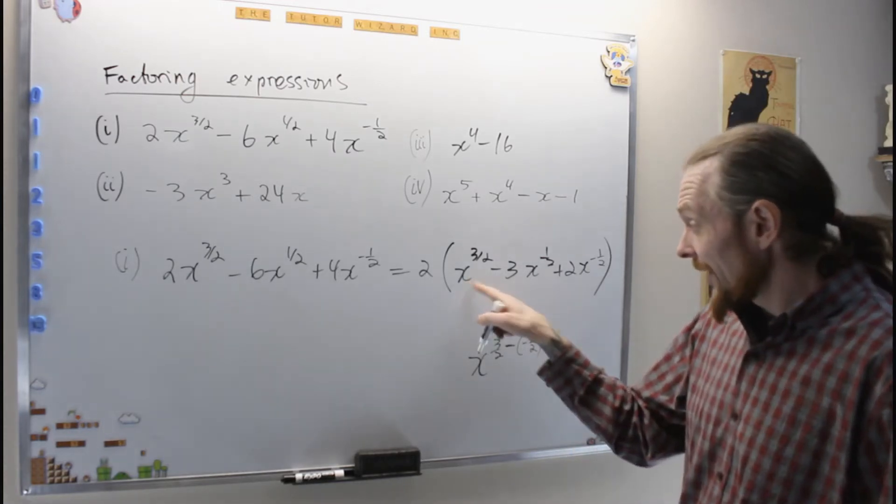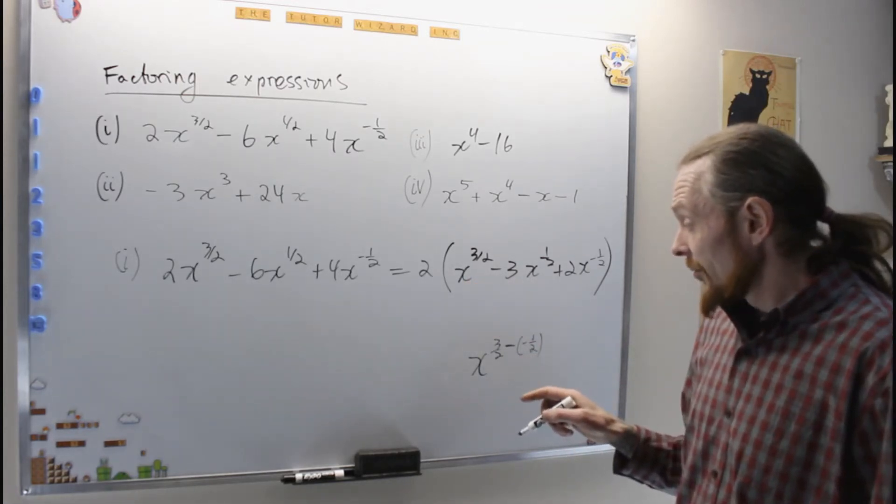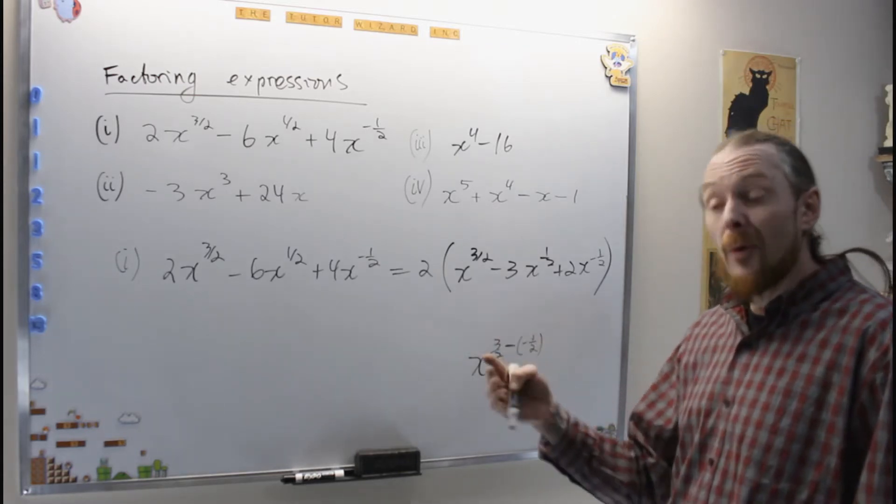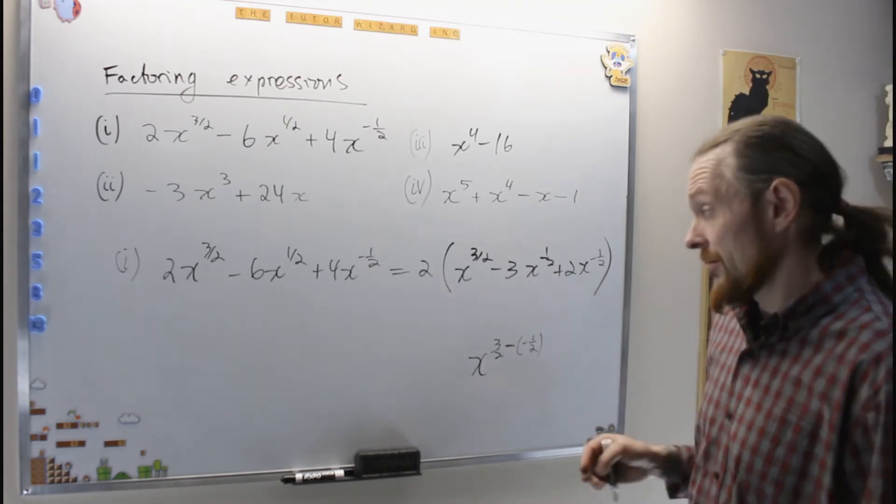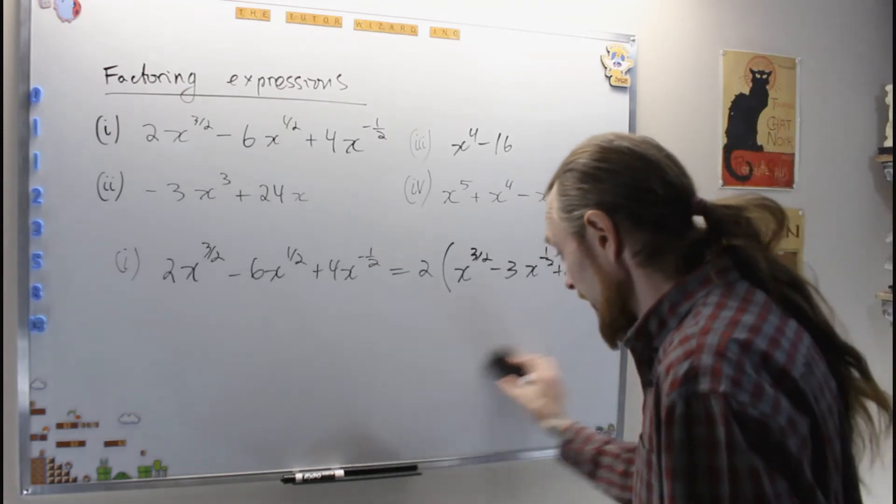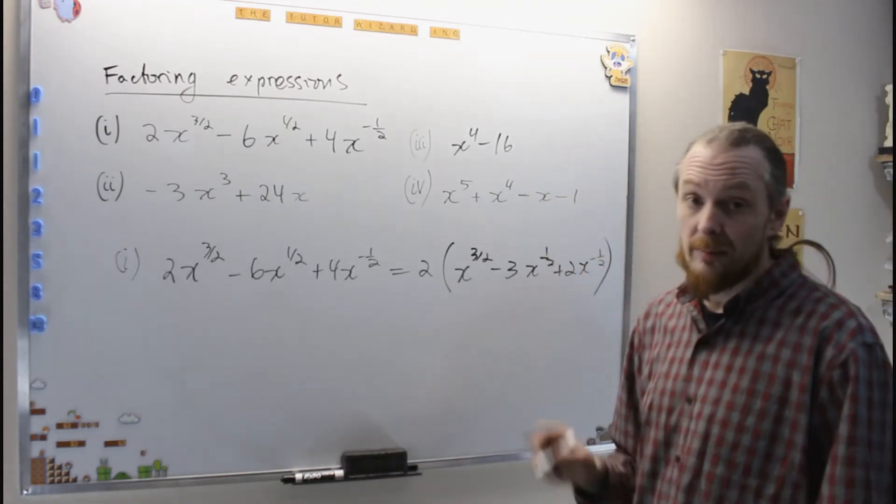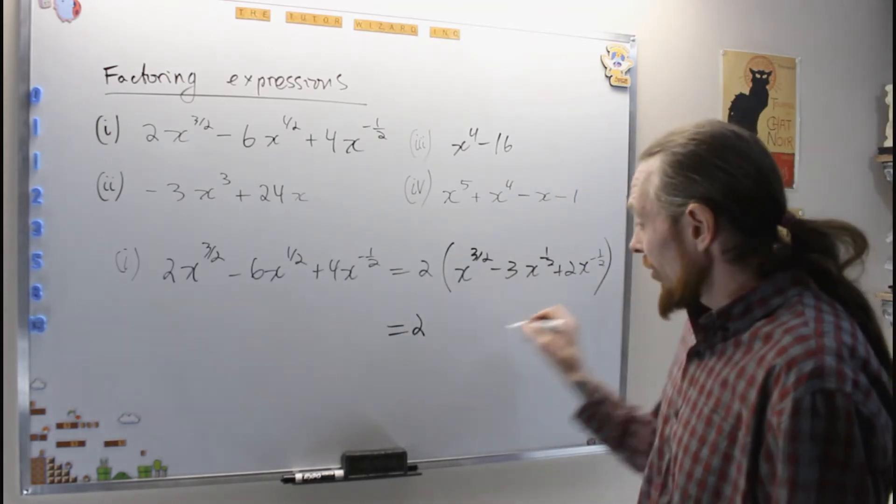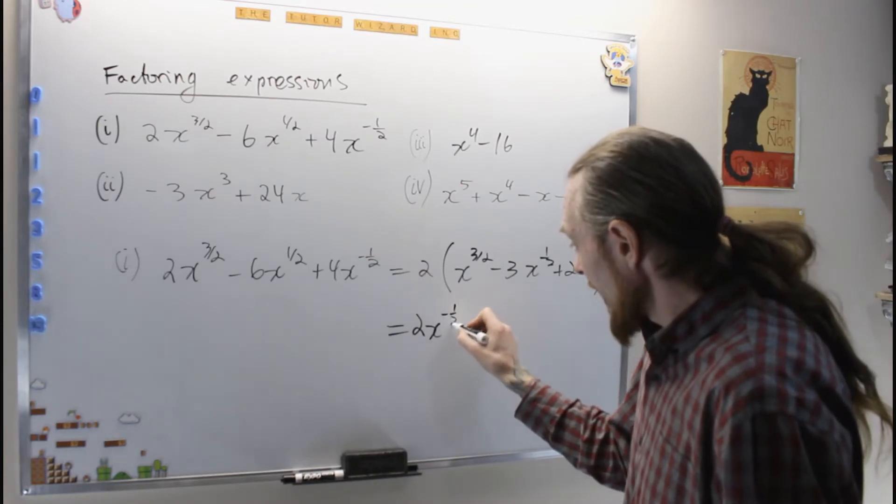So what's going to be left here when we do that, we're going to have x to the 3 over 2 minus minus 1 half, which will be x to the 4 over 2, or x squared. So let me do that move, and then you'll see, you can contemplate. Equals 2 times, now I'm going to take out the lowest exponent, x to the negative 1 half.